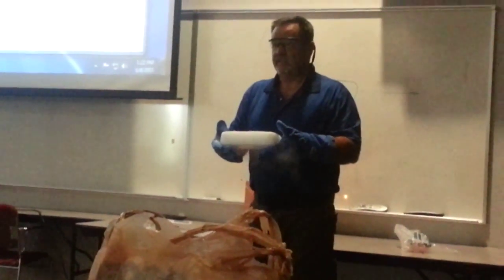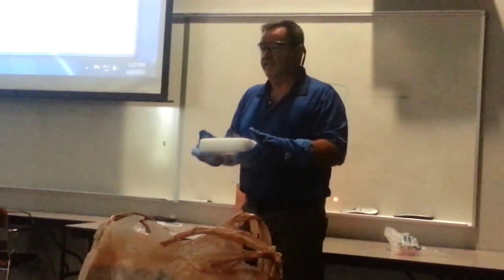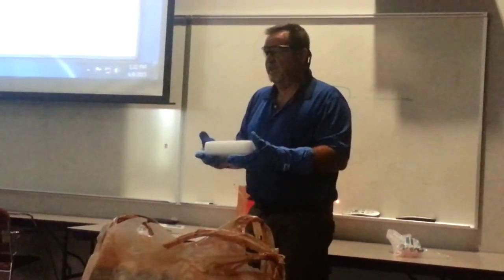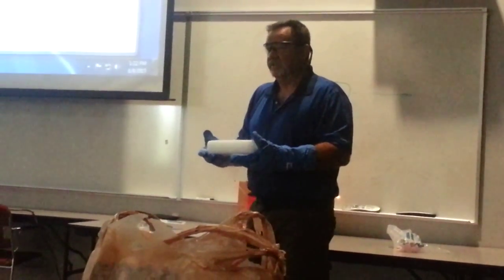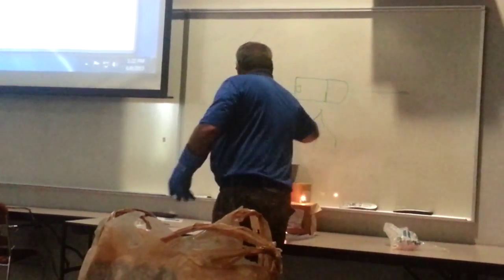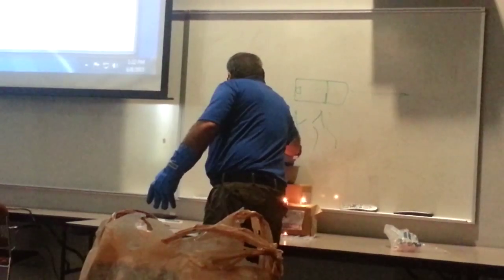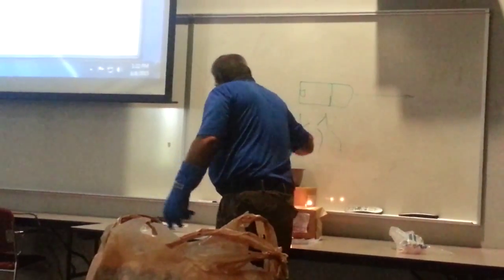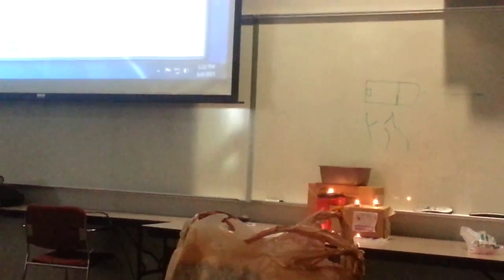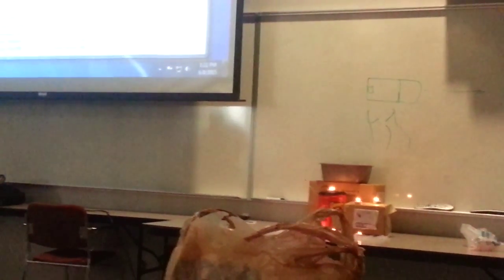Dry ice — you can see it's already off-gassing. If you were to just leave this on the table, it would just vanish. What we're going to try to do now is take semi-warm water and pour it over the dry ice.